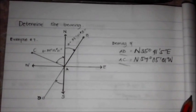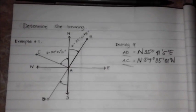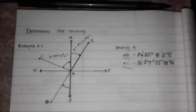In determining a bearing of a specific line, we should consider the position of the line in a quadrantal system to find its direction.